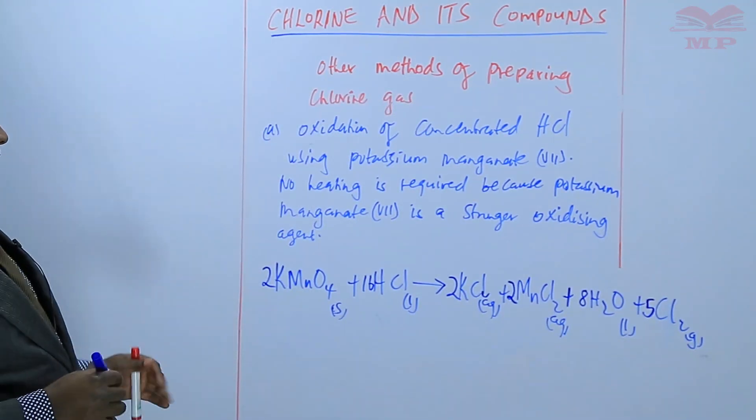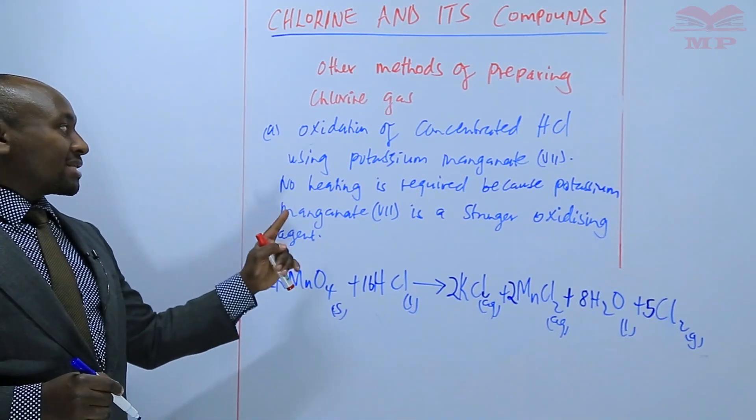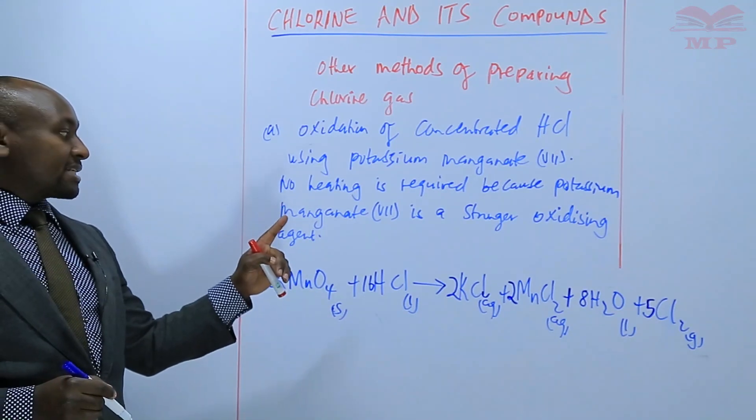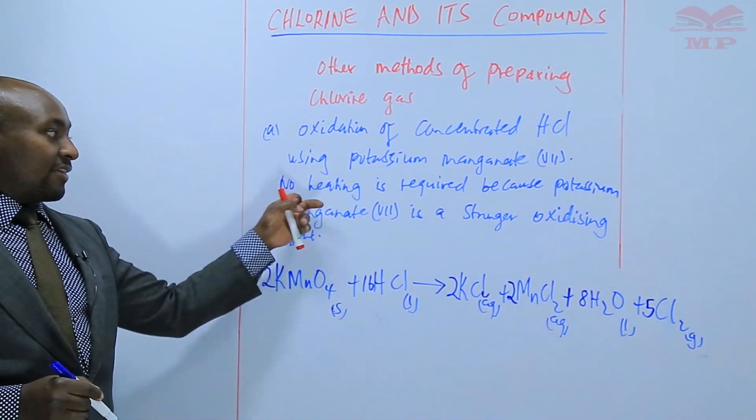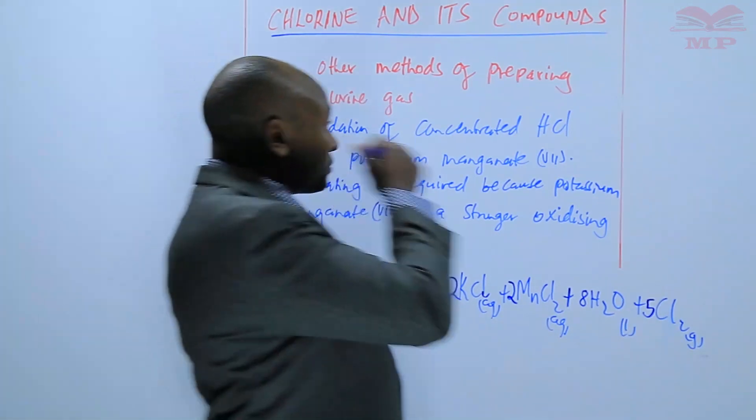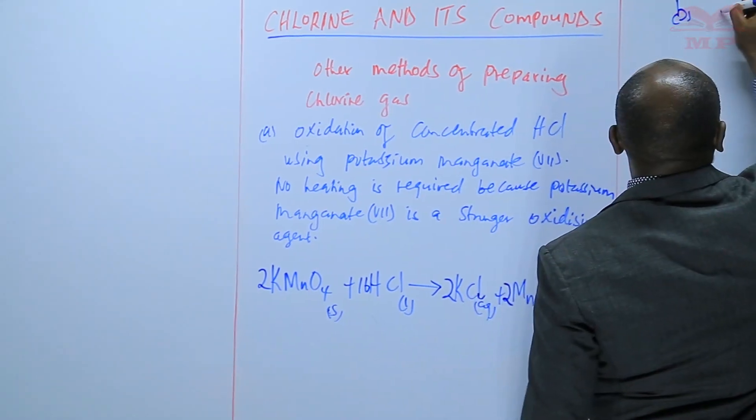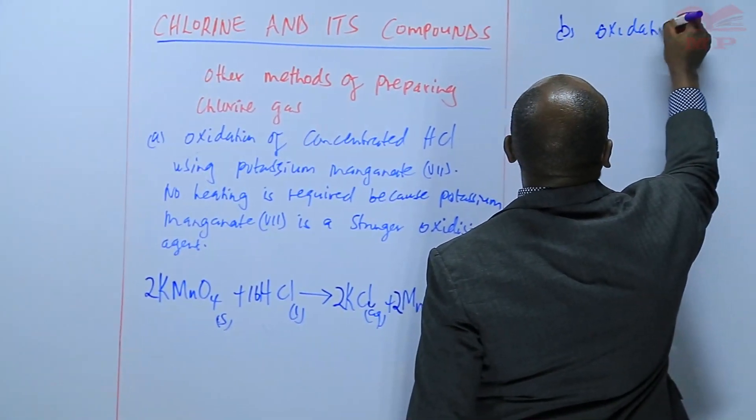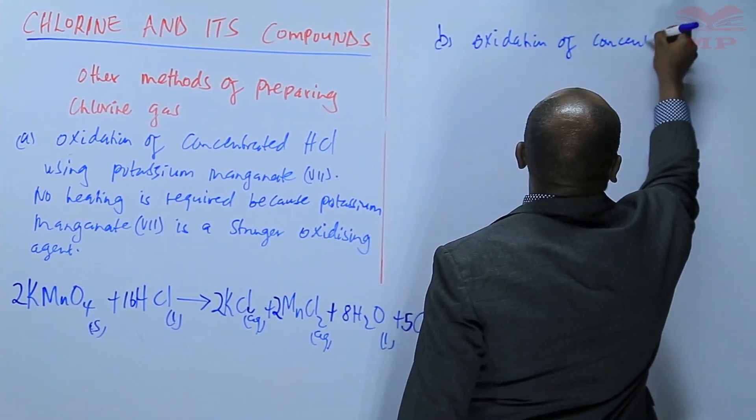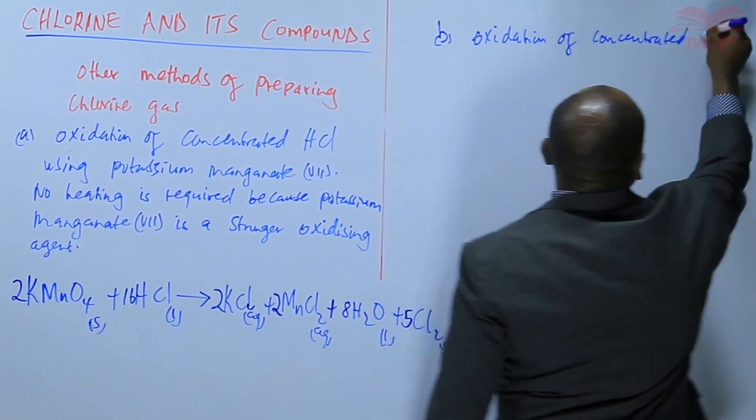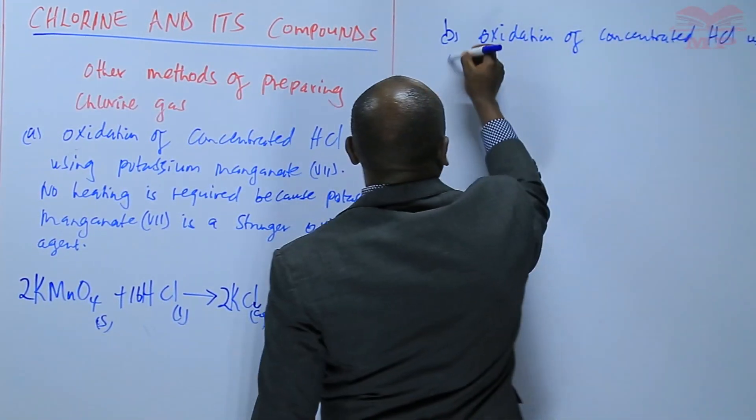Basically we are saying that in this reaction, concentrated hydrochloric acid is oxidized using potassium manganate seven, which is a stronger oxidizing agent, and therefore no heating is required. Another method is oxidation of concentrated HCl hydrochloric acid using lead four oxide.